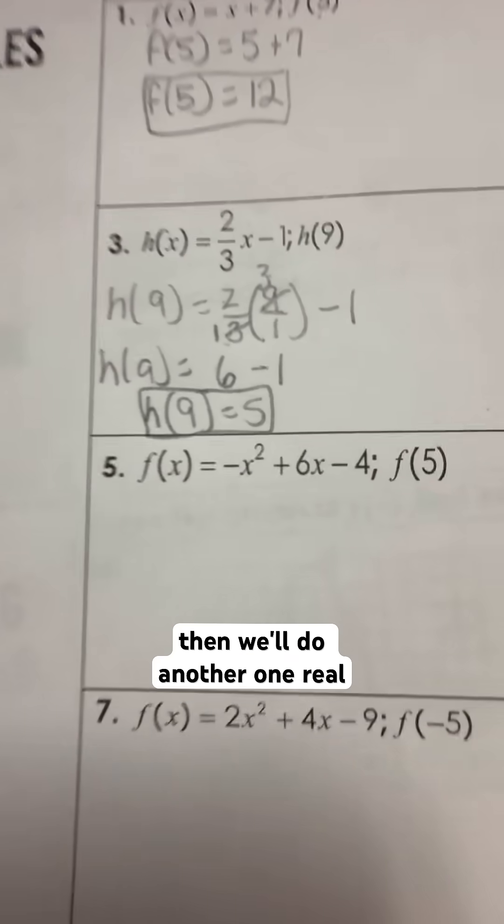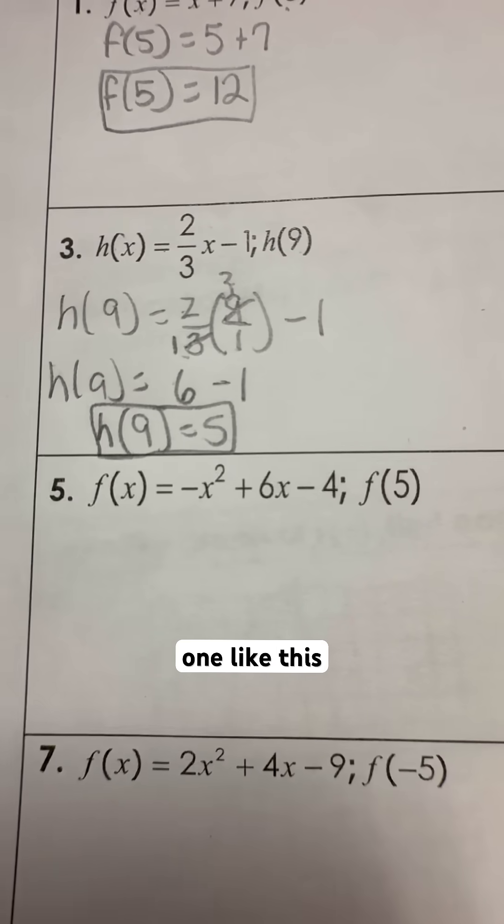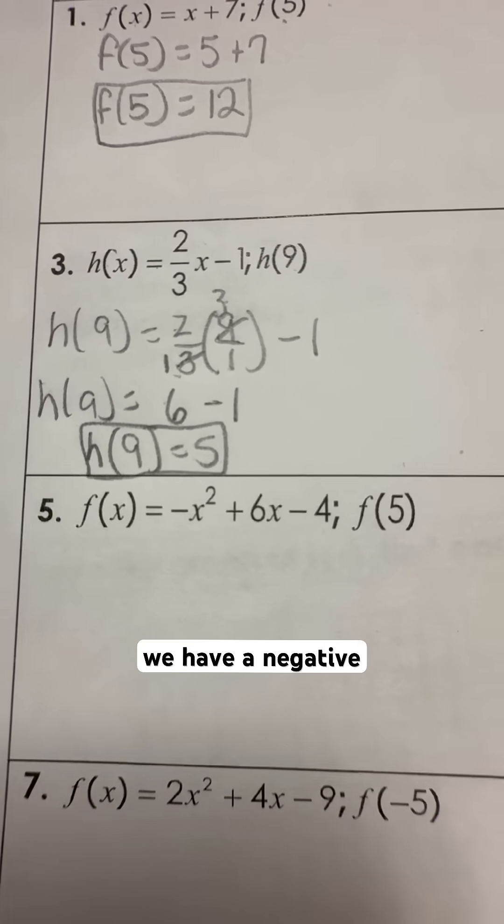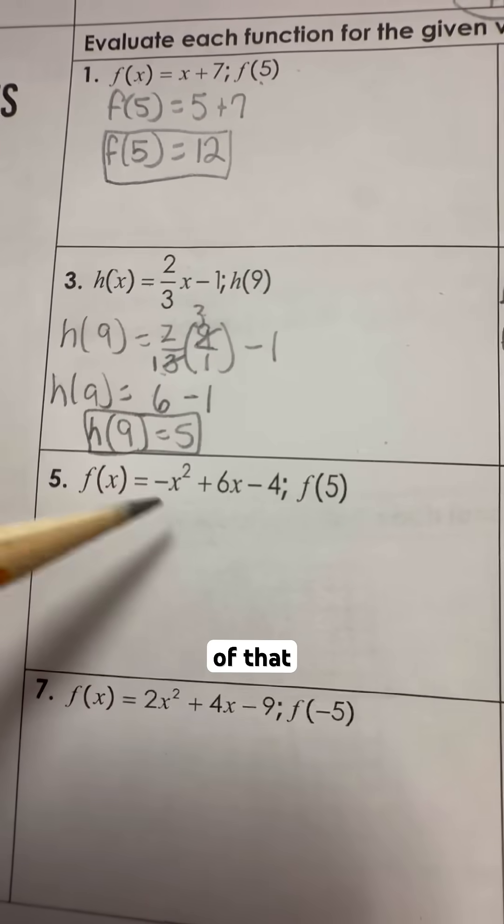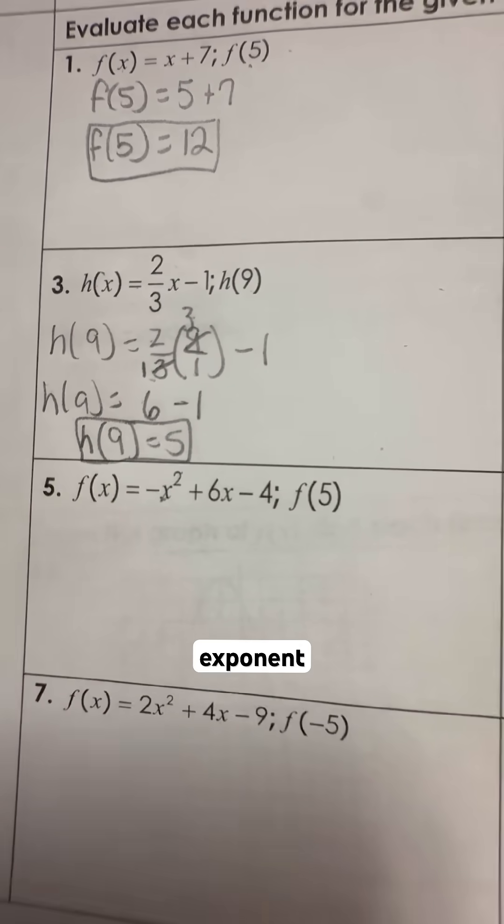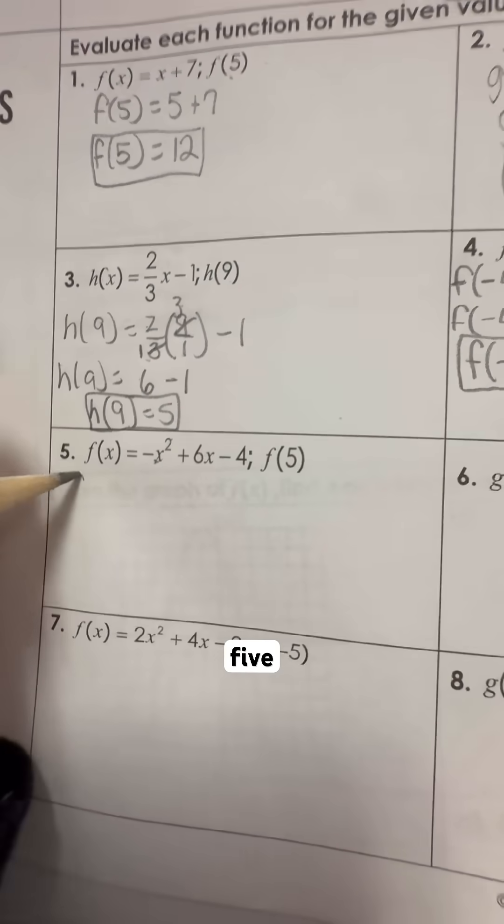And that is your correct finalized answer. And then we'll do another one real quick. Now this one is very much a similar one like this where we have a negative but outside of that exponent.